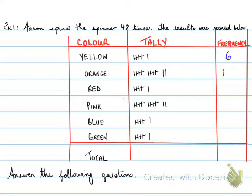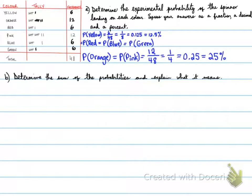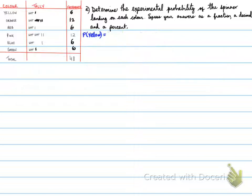We're going to answer questions based on this chart. Let's fill in the numbers: 6, 12, 6, 12, 6, 6. We add it up and it should equal the total number of times that it was done, the experiments that we had taken, the outcomes. The first question: Determine the experimental probability of the spinner landing on each color. Express your answer as a fraction, a decimal, and a percent. I want all three answers shown.